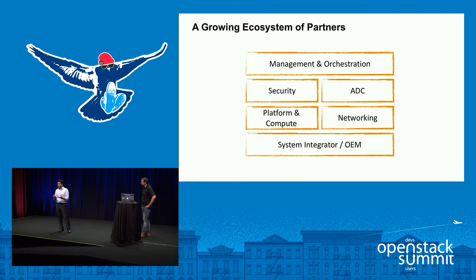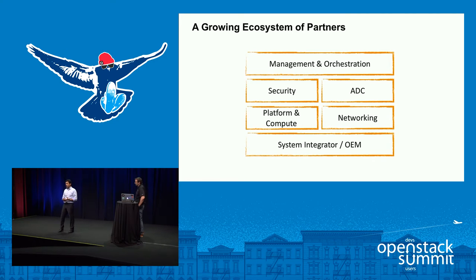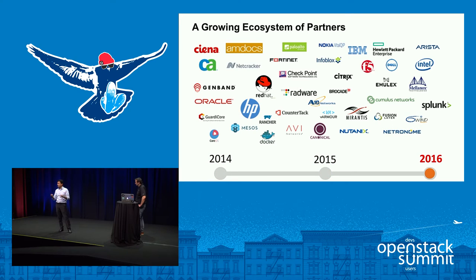Our focus area is building a technology partner program around the product. As a networking product we have multiple touch points with partner solutions: management and orchestration, cloud management systems such as OpenStack, service chaining for security appliances and load balancers, hypervisor platforms, networking products such as top-of-rack switches, and system integrators. Nothing is really custom about our integrations — everything we do from a networking perspective is API-driven, so all integrations are standard. For example, when we work with a load balancer appliance we use LBaaS v1 and v2.